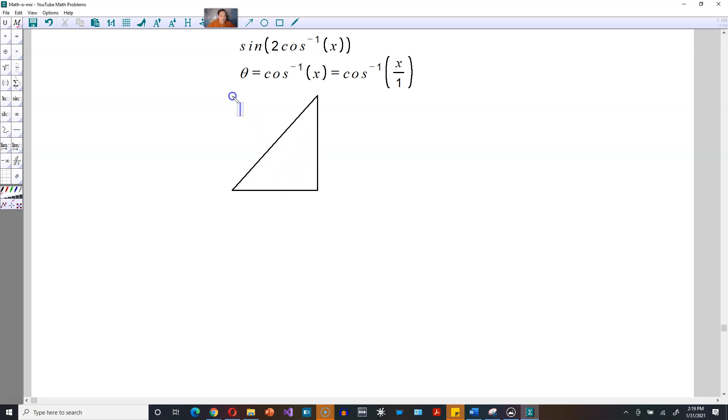That triangle might look like the following. In this context, the horizontal leg is x from cosine inverse where it says x over 1, and then this is 1 by definition.